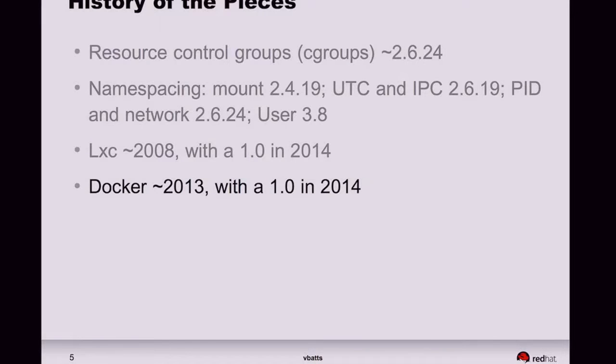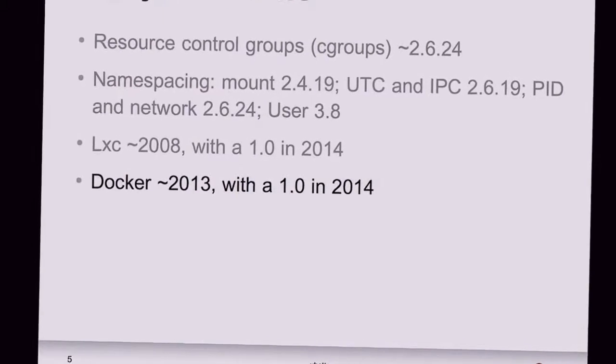Whereas Docker — they started cooking up Docker around January 2013, but it didn't have its first public release until last summer. It also had its 1.0 this summer in about June. It's crazy — it's already up to 650 contributors on GitHub and over 10,000 stars and forks. It's a very hot project.